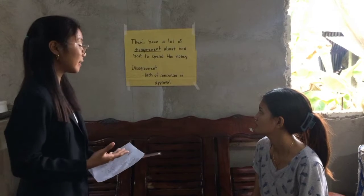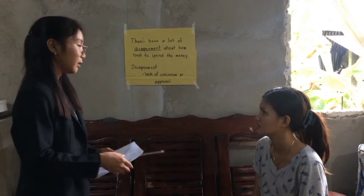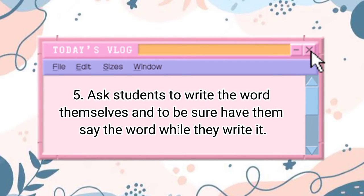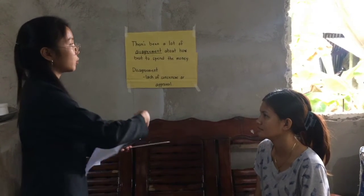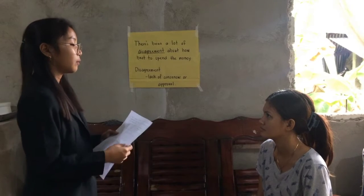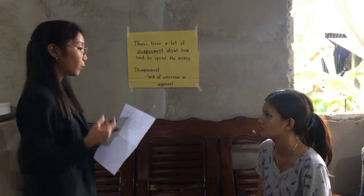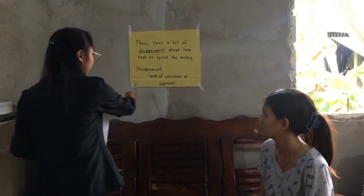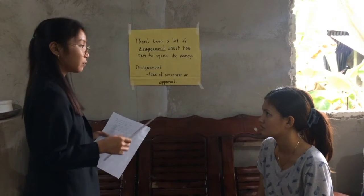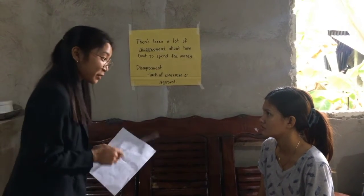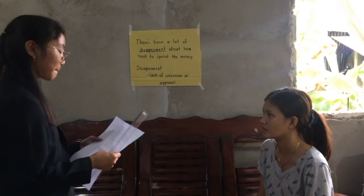Step five: Ask students to write the word themselves, and be sure to have them say the word while they write it. What I want you to do now is write the word 'disagreement' on your paper ten times, and read it aloud by yourself as you write it.